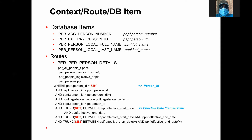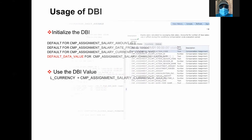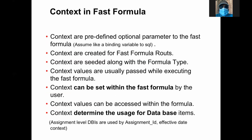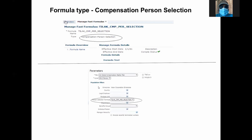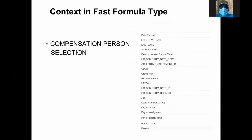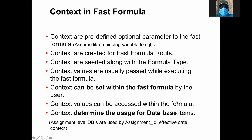If you understand these three parts, it is easier to go further. Now, we come back to context. This is an example of context, which is seeded with a formula type. I'm giving the example of compensation. These are the contexts supported by that formula type — assignment, grade ID, all these things are supported. Contexts are predefined optional parameters. Contexts are created for and passed through formula routes. Contexts are seeded along with the formula type. Context values are usually passed while executing the Fast Formula — that is true.